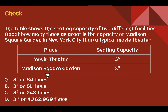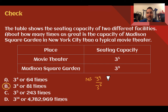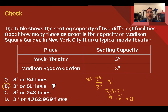Check your understanding: read through the situation and use the table to determine how many times greater Madison Square Garden is than a movie theater. Pause the video now and complete the check. You should have said B — it's 3 to the 4th, or 81 times larger. Madison Square Garden goes on top: 3 to the 9th, divided by the movie theater, 3 to the 5th. Subtract their exponents: 3 to the 4th. So 3 times 3 times 3 times 3 — these two make 9, these two make 9, and 9 times 9 is 81.